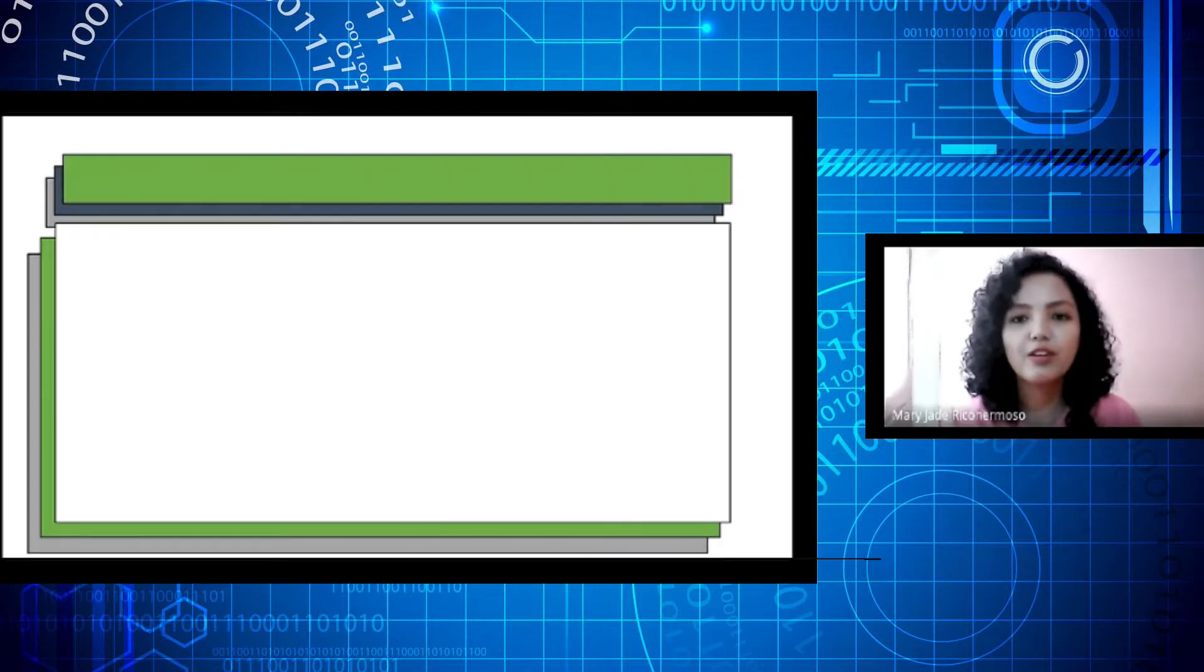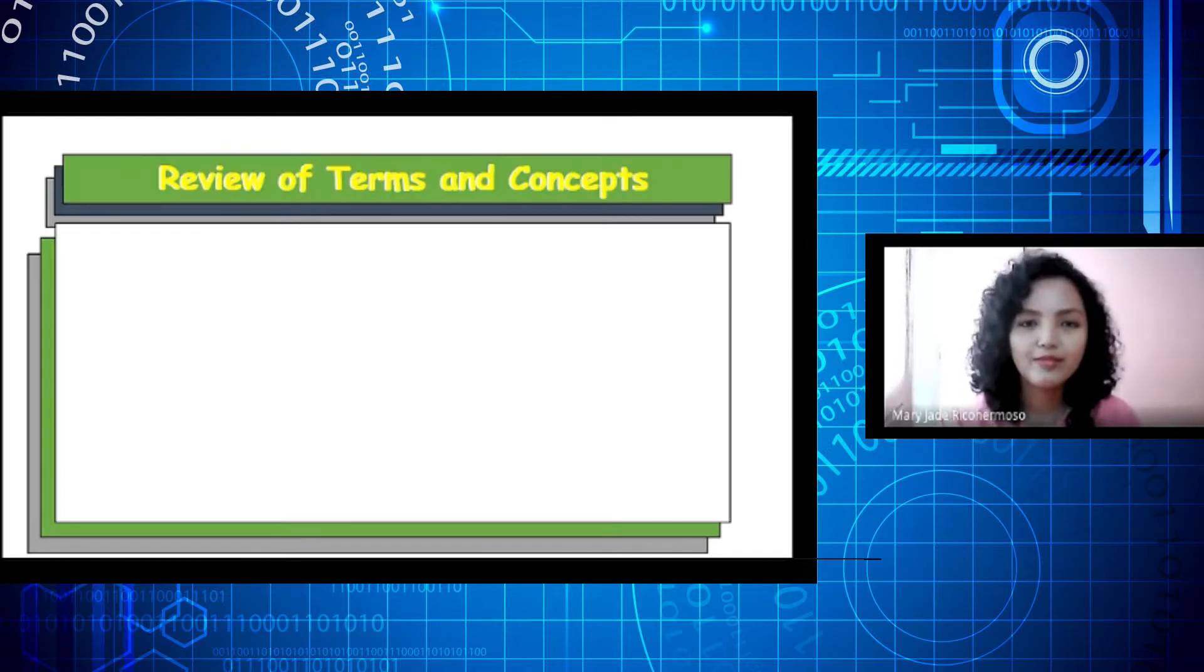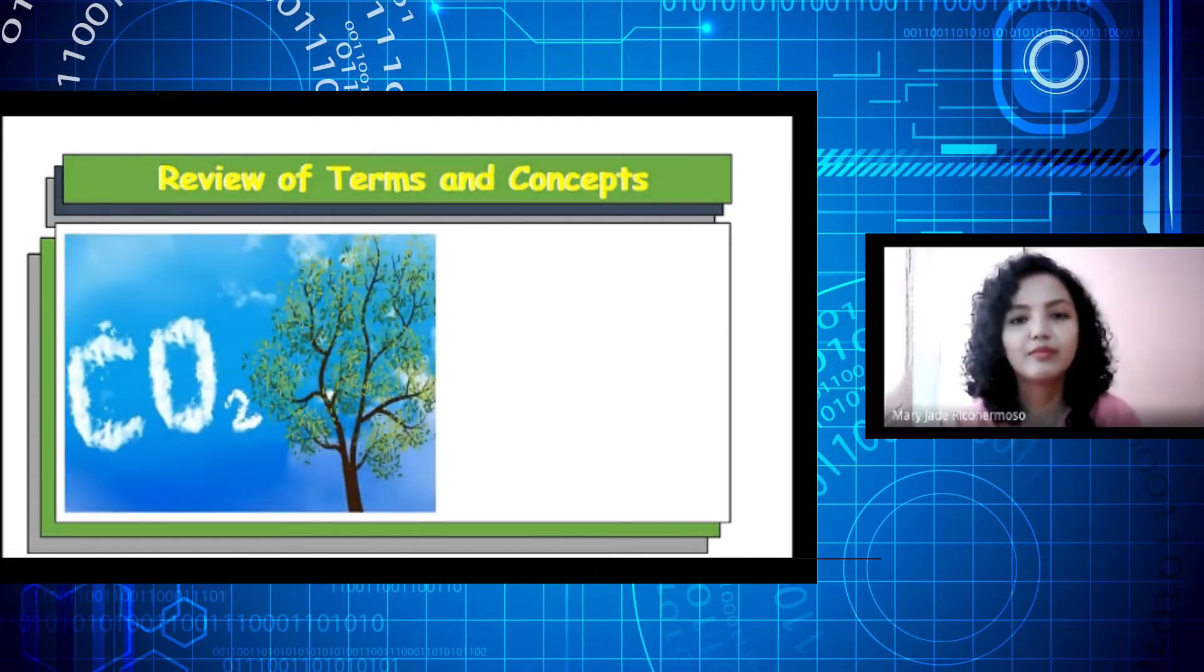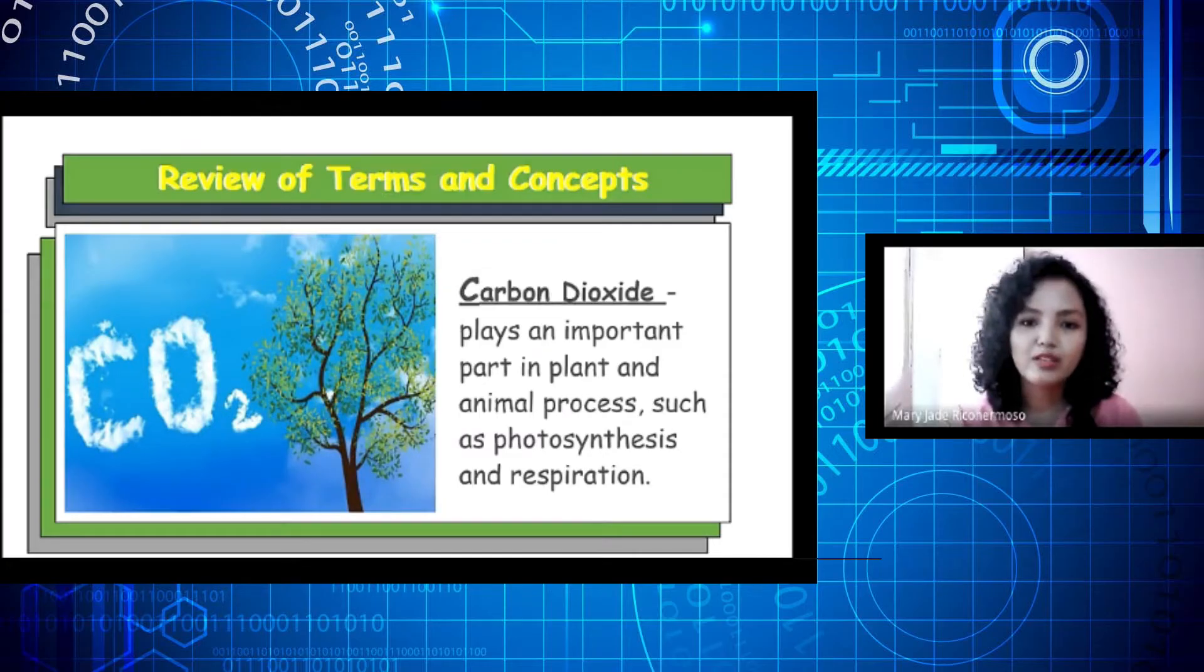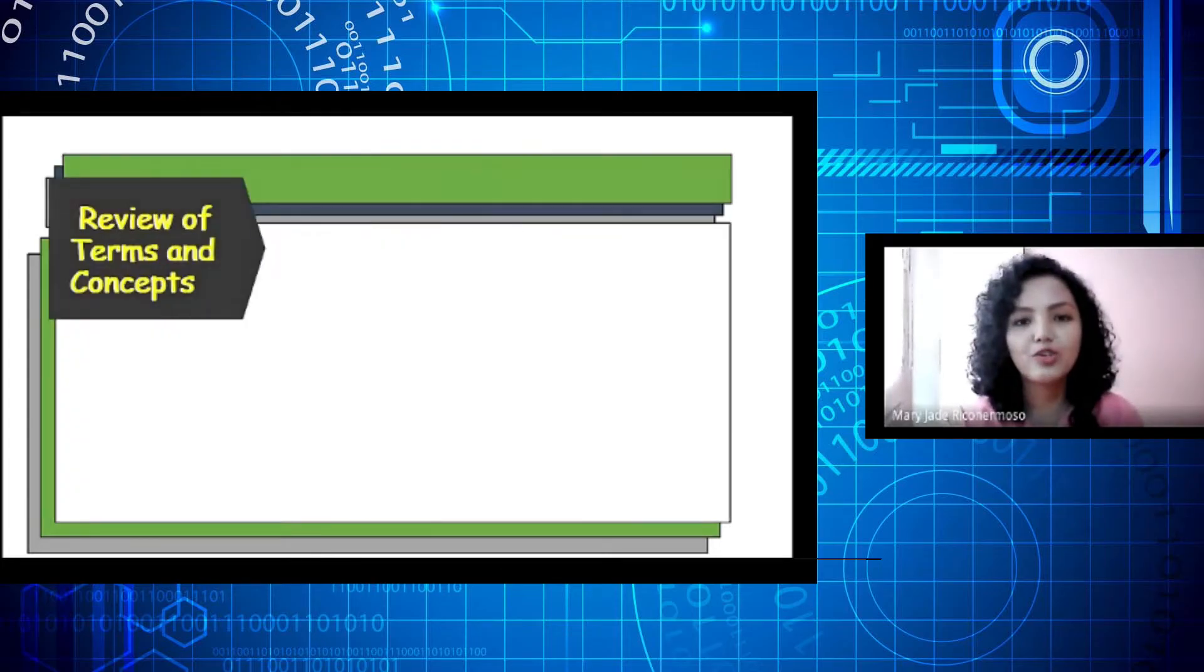For our review of terms and concepts in science, I am going to show you a picture and you are going to identify it. Are you ready? Let's begin! Correct! This one is carbon dioxide. Carbon dioxide plays an important part in plant and animal processes, such as photosynthesis and respiration. Next picture.